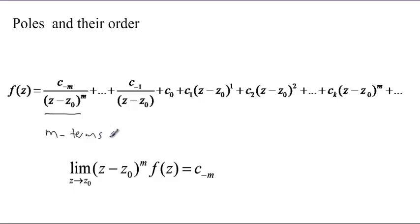Then z equals z0 is called a pole, and the number m defines what you call the order of the pole. In the case that m equals 1, we call that pole a simple pole.